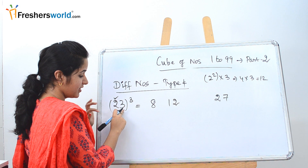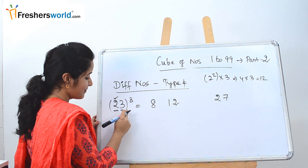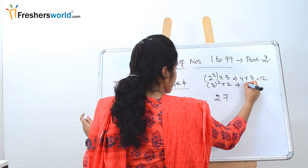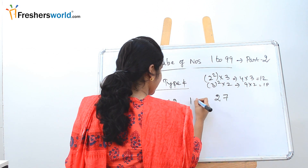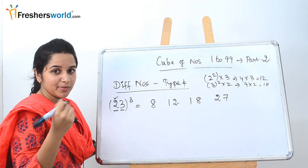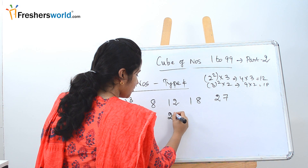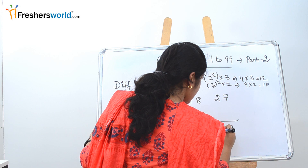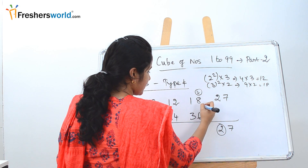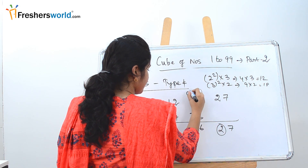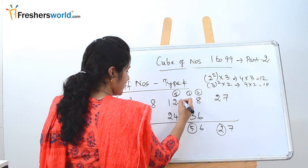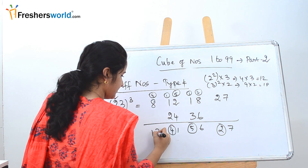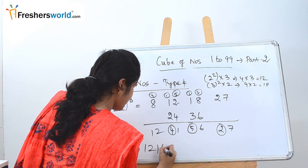Similarly, square the second number and multiply by the first: 3 squared into 2 is 9 times 2, which is 18. Write it in the next position. Then multiply the middle two digits by 2: 12 times 2 is 24 and 18 times 2 is 36. Now add the columns: 27, carry 2; then 10, 6, 5; carry 5; then 7, 11, write 4; carry 4; giving 12. So the result reads 12,167.